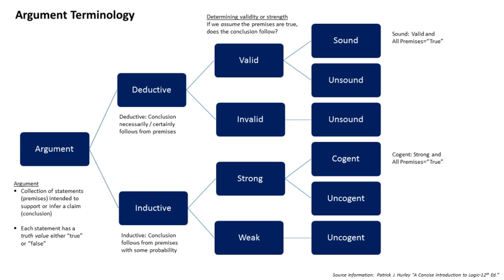An inductive argument asserts that the truth of the conclusion is supported to some degree of probability by the premises. For example, given that the U.S. military budget is the largest in the world, then it is probable that it will remain so for the next ten years. Arguments that involve predictions are inductive, as the future is uncertain. An inductive argument is said to be strong or weak. If the premises are assumed true, and it is probable the conclusion is also true, the argument is strong; otherwise, it is weak. A strong argument is said to be cogent if it has all true premises; otherwise, it is uncogent. The military budget argument example above is a strong, cogent argument.